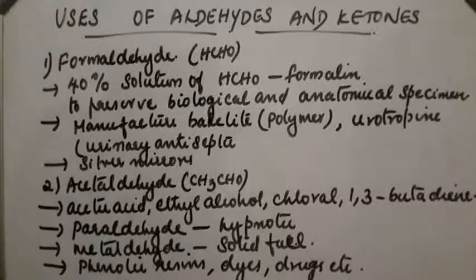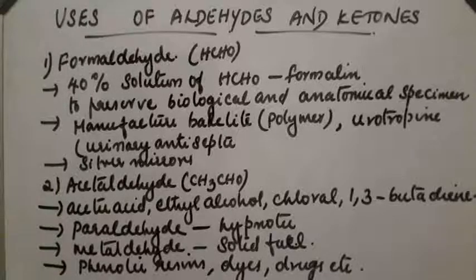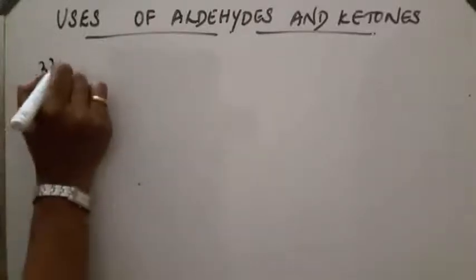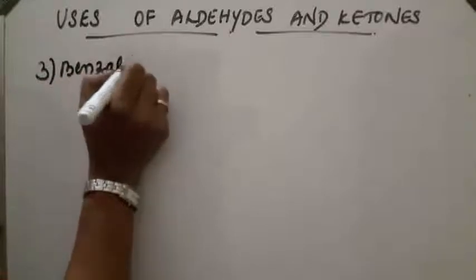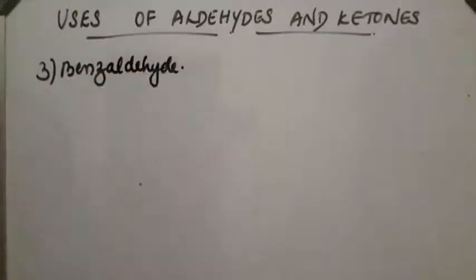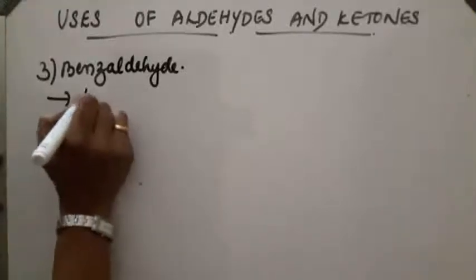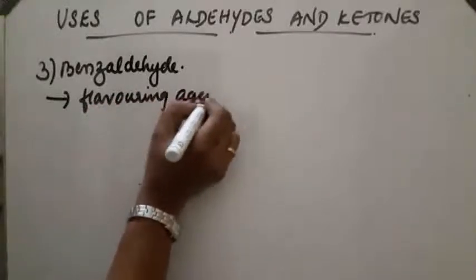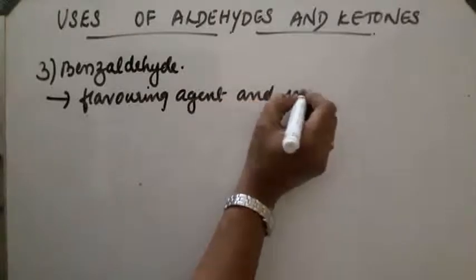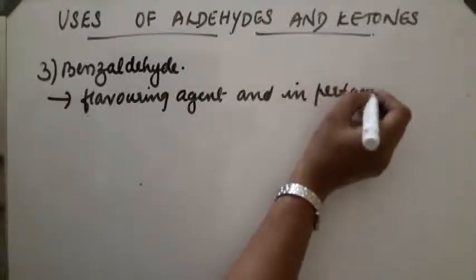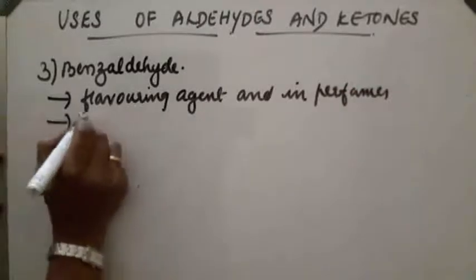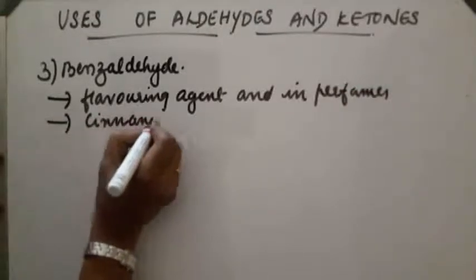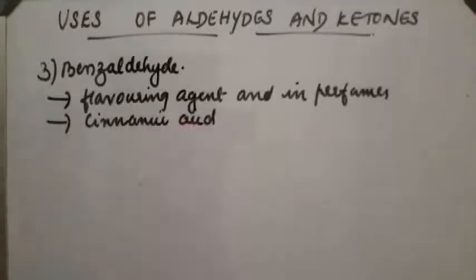These are the important uses of formaldehyde and acetaldehyde. The third compound is benzaldehyde. It is used as a flavouring agent and in perfumes. It is also used for the preparation of cinnamic acid.